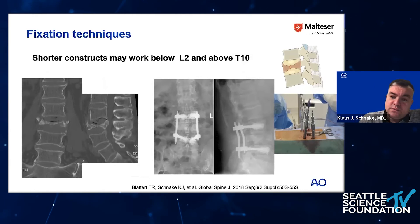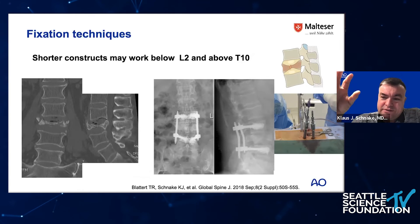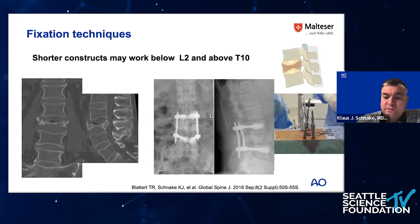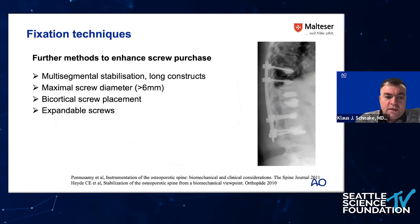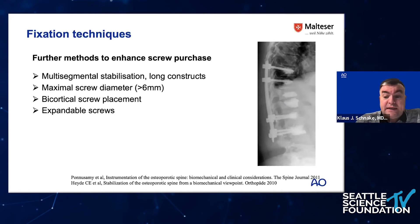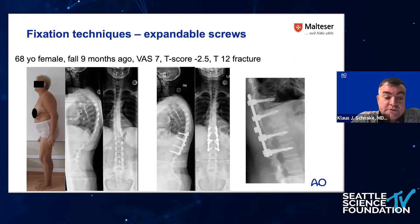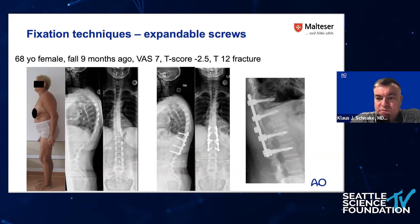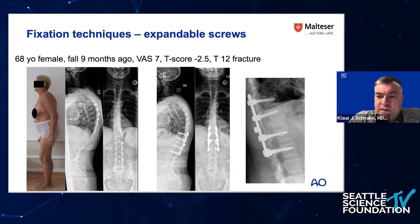Shorter constructs may work below L2 and above T10, but especially at the thoracolumbar junction there is a significant risk of local kyphosis. If short constructs are used, screws should be augmented. Further fixation options include cortical screw placement — though do not cement cortical screws, as cement may escape anteriorly. Expandable screws are an option; they work as well as cemented screws, but cannot be removed again, which is a significant limitation in case revision is needed.